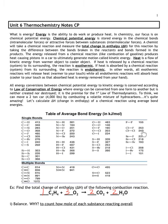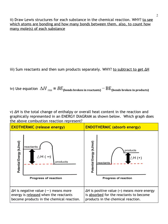In step 2, we draw the Lewis structures for each substance in the chemical reaction. We do this to see which atoms are bonding and how many bonds are between them, and also to account for how many moles of each substance we have. You'll need your periodic table to figure out the number of valence electrons involved in each atom as we bond them.